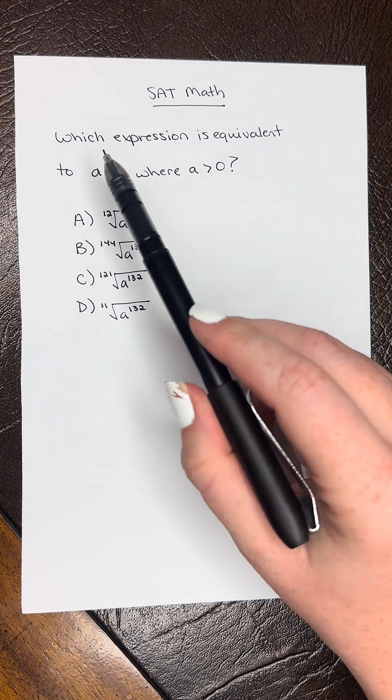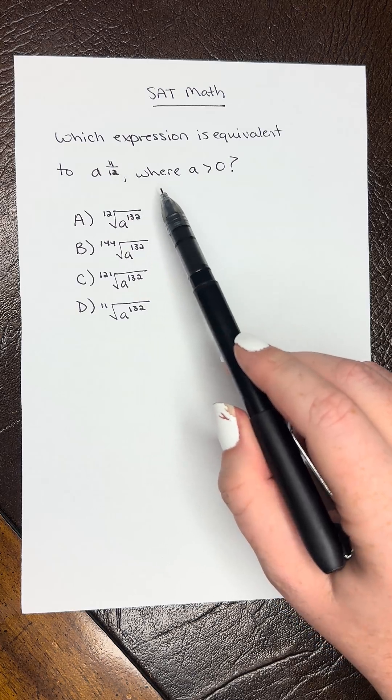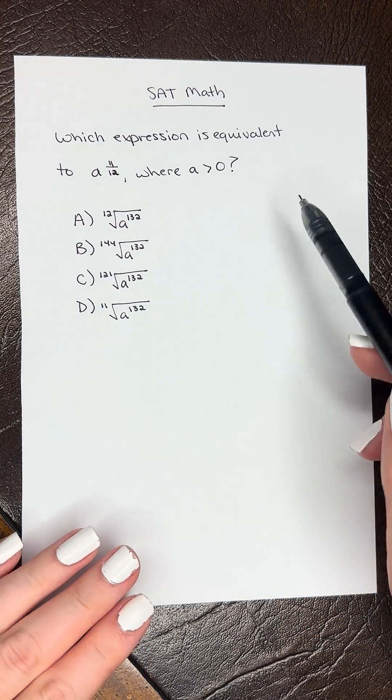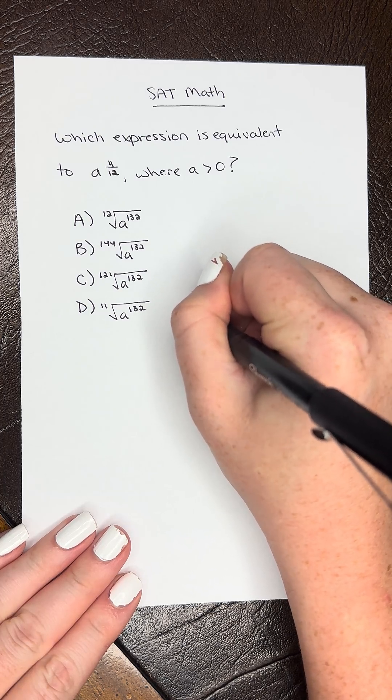SAT math question of the day. Which expression is equivalent to a raised to the 11 over 12, where a is greater than zero? So we have a to the 11 over 12.